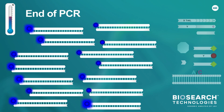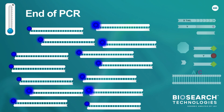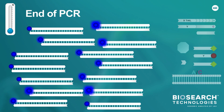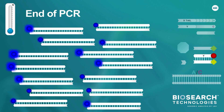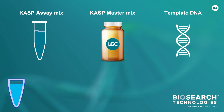Before reading the fluorescence, completed CAASP reactions must be cooled to below 40 degrees Celsius. At this temperature, any of the fluorescently labeled oligos that have not been incorporated will be quenched and will therefore not emit fluorescence. The fluorescently labeled oligos, in this case FAM, have been incorporated into the PCR products, are no longer quenched, and will therefore emit fluorescence.